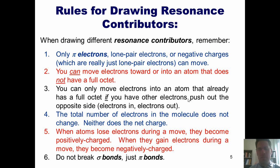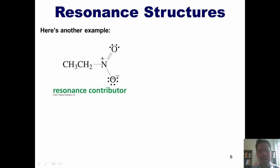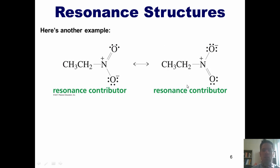Now that we have those rules down, let's apply them to some examples. Imagine this nitrogen double-bonded to an oxygen, single-bonded to an ethyl group, and single-bonded to a negatively charged oxygen. This negative charge — which really represents two lone pair electrons on this oxygen — could come down and snap closed like doors on a hinge to form an oxygen-nitrogen bond. However, if we were to do that, the nitrogen would now have ten electrons around it, violating the octet rule. Thus, in order for these electrons to come down and snap closed to form a double bond, I have to push these two electrons up onto the oxygen on top, giving us another resonance contributor. This resonance contributor can of course go in reverse, giving us the original structure from which we started.